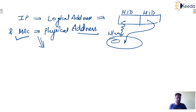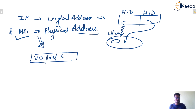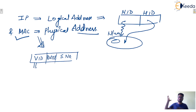MAC address is used as a physical address but not as a logical address, because the physical address has three sections — vendor ID, date of manufacturing, and serial number — and these will not help to identify any network. For example, if you bought a system from the US and are using it in India, the vendor ID will be from the US, but that doesn't mean the system is in the US — it may be present in India. So vendor ID and similar fields will not help identify the network.